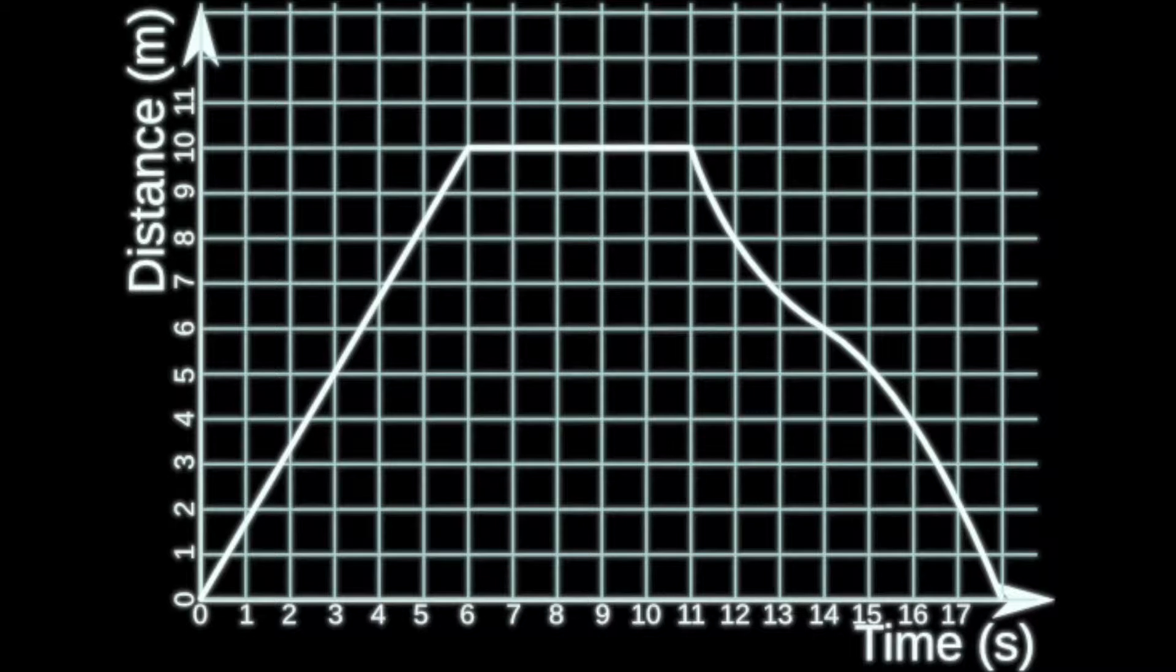Then at 6 seconds you can see that there is a straight line until 11 seconds. Now that shows that the person or the car has stopped, so for a car for example it might be at traffic lights, for a person they might be at traffic lights again or they might have just stopped to visit a shop or something.